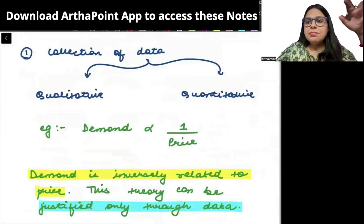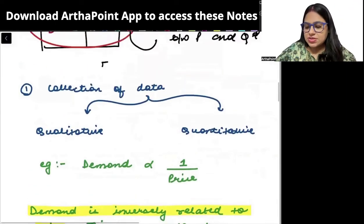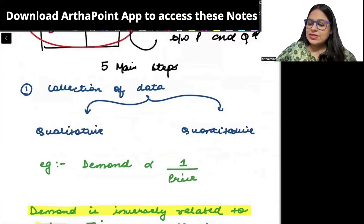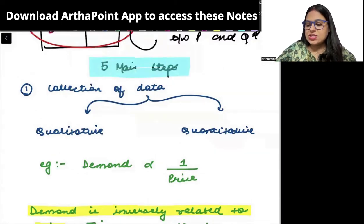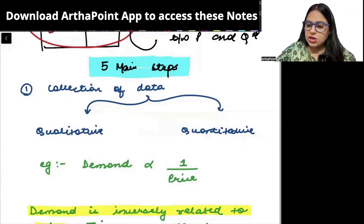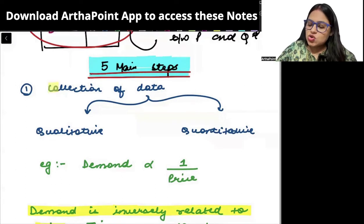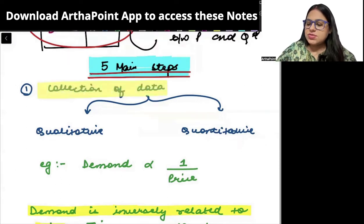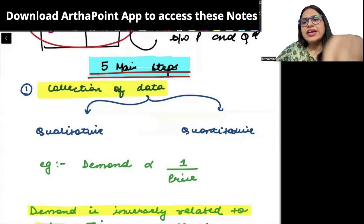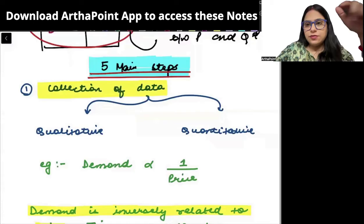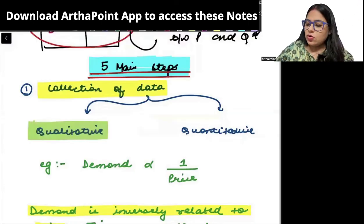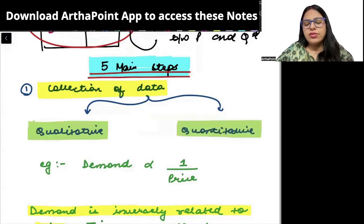Now there are mainly five main steps involved in this empirical science. The first step is collection of data. We need to collect the data. The data that we are collecting can be qualitative or it can be quantitative.